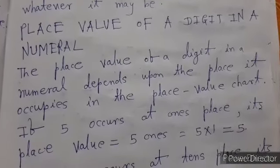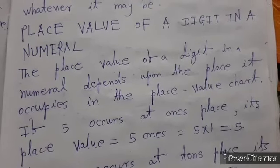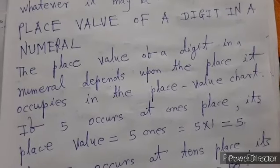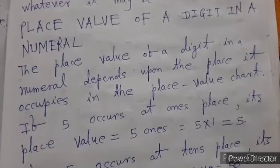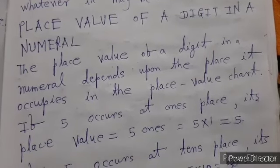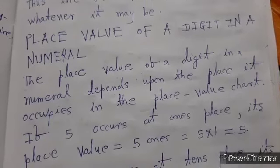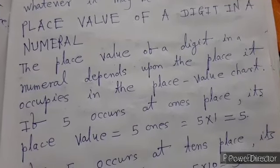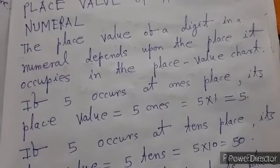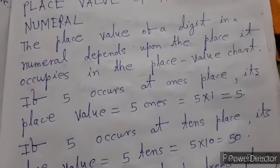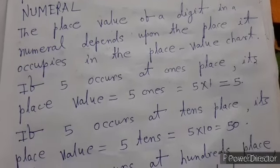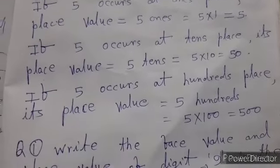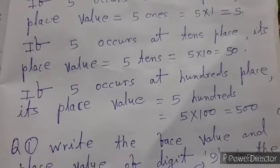Place value of a digit in a numeral depends upon the place it occupies in the place value chart. If 5 occurs at ones place its place value equals 5 times 1 equals 5. If 5 occurs at tens place its place value equals 5 times 10 equals 50. If 5 occurs at hundreds place its place value equals 5 times 100 equals 500.